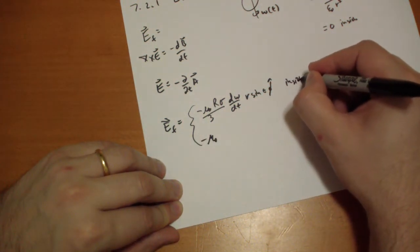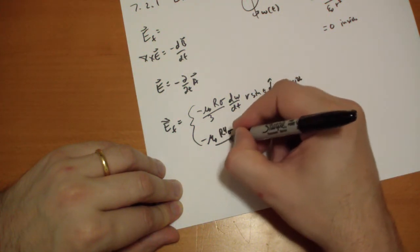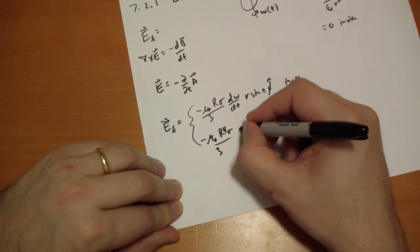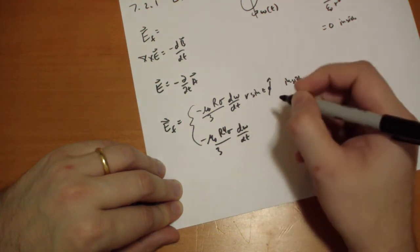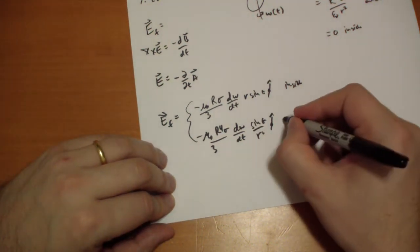And outside we get omega mu-naught r to the fourth sigma divided by 3 d omega by dt. And then we get sine theta over r squared in the phi-hat direction. That's outside.